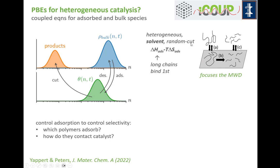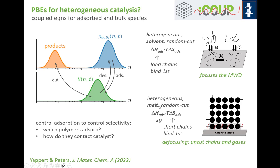Will polymers contact the catalyst only on the ends of the chains, or will they be able to lay down flat on the surface and get cut at any random location along the backbone? If the polymers are dissolved in a solvent and allowed to lay flat on the surface, displacing a whole bunch of solvent molecules, you need a better enthalpy of interaction with the catalyst. That causes enthalpy to dominate adsorption behavior, and because of that, long chains should bind first.